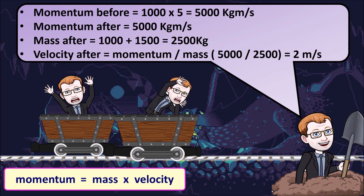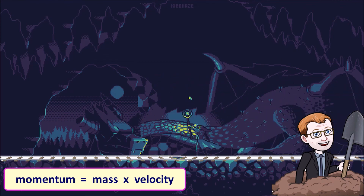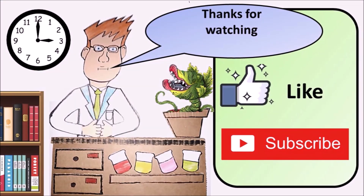Working out the velocity after: we divide the momentum by the total mass — 5000 divided by 2500 — which gives us a velocity of 2 meters per second. Thanks for watching.